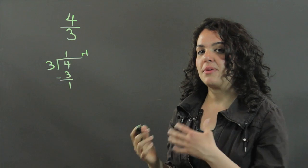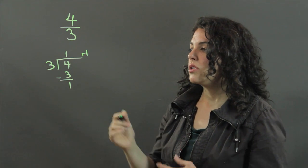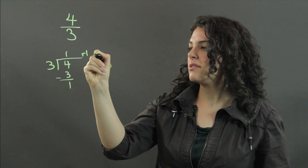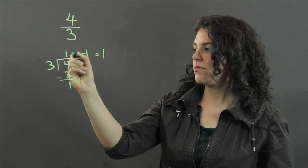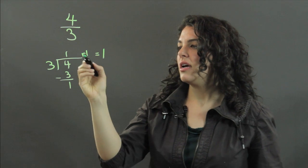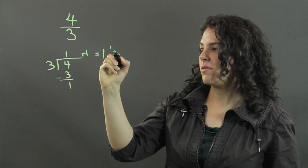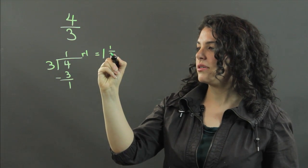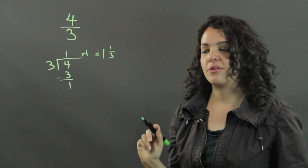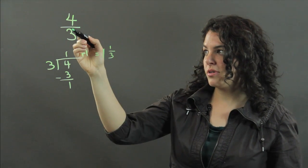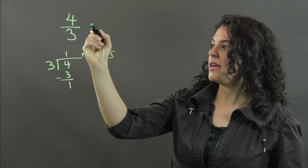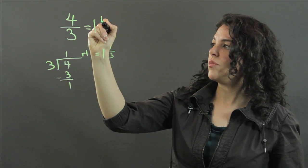Any remainder can be handled this way. So we can rewrite this as 1 for our whole that we have here, and the remainder of 1 being written as our remainder over our divisor, or 1 third. So 4 thirds can be rewritten as 1 and 1 third.